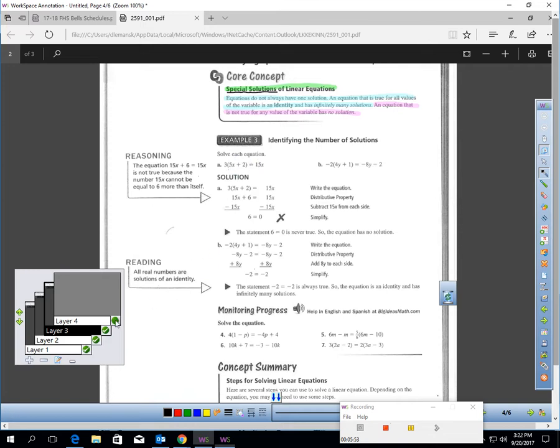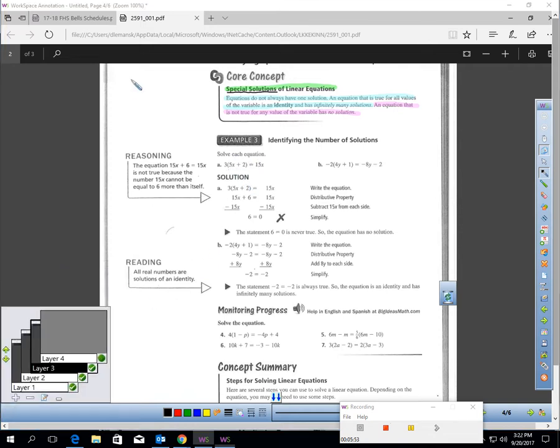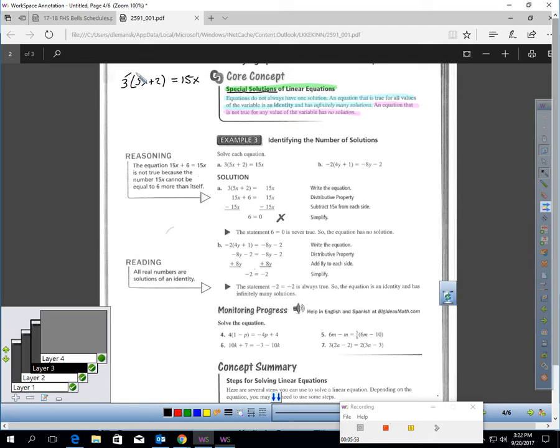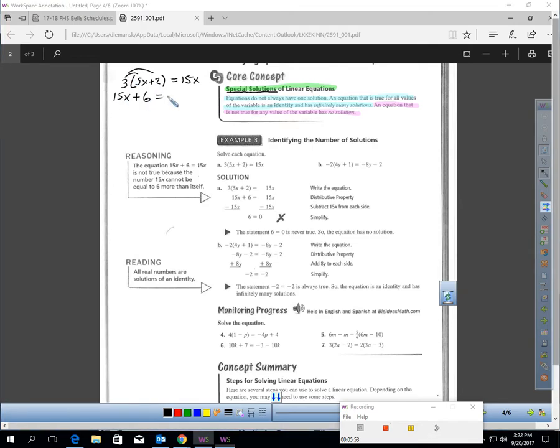Let's look at this. We have 3(5x + 2) equals 15x. Step one, simplify. We'll distribute. 15x plus 6 equals 15x.